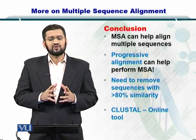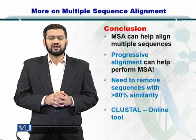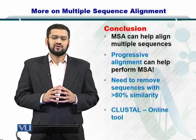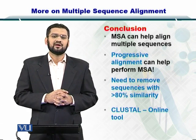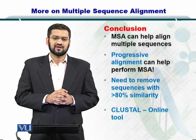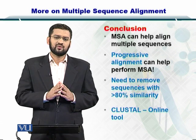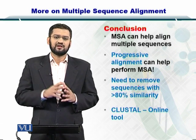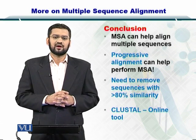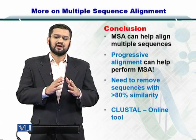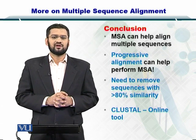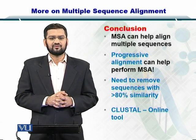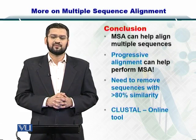An important thing to remember is that you need to consider only those sequences that are divergent or different from each other by less than 80%. If you have two sequences that are more than 80% similar to each other, you don't want to include them both, because this will create a bias towards those two sequences. Lastly, ClustalW is an online tool that can help you to perform multiple sequence alignment.